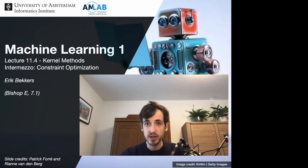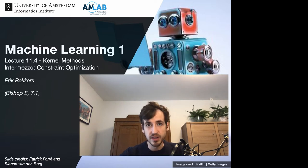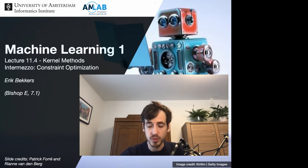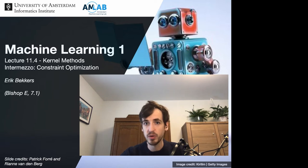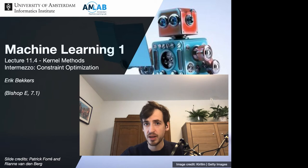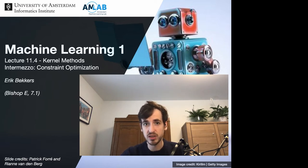We already spent a separate video on constraint optimization under equality constraints. In this video I'm going to build upon that but now consider the problem of optimization under inequality constraints. We just saw that when optimizing maximum margin classifiers we need to solve a convex optimization problem under inequality constraints. We will be able to solve this problem by first formulating a dual optimization problem, and then it turns out that the solution to this dual problem gives us the solution to the original problem.